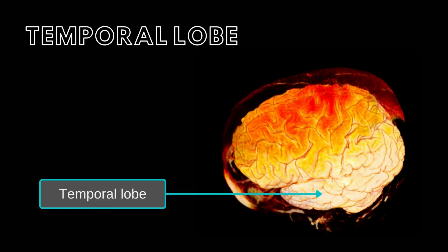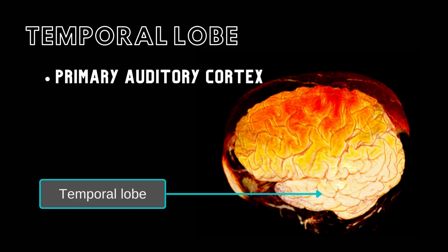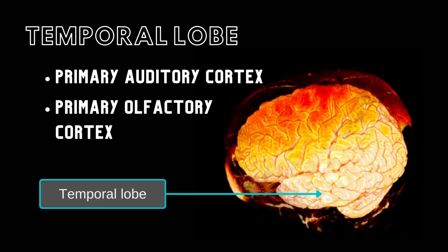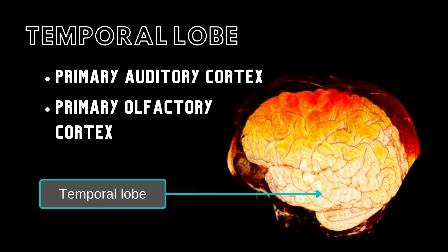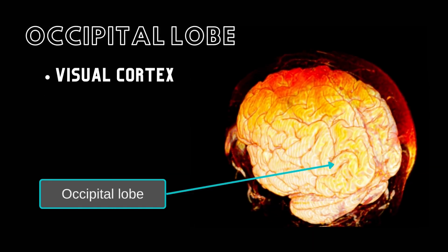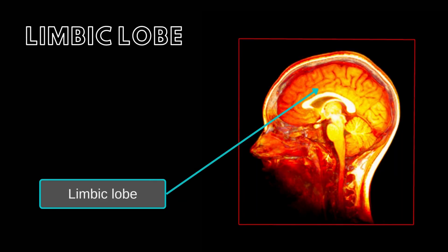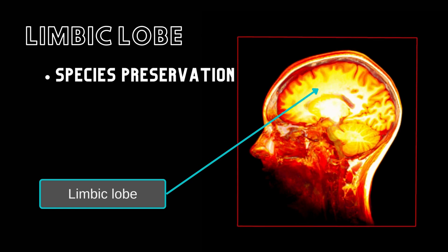The temporal lobe contains the primary auditory cortex, which receives auditory sensory information, and the primary olfactory cortex, which receives olfactory sensory information. In the occipital lobe, you can find the visual cortex, which receives and interprets visual information. The limbic lobe is responsible for behaviors that are essential to species preservation.